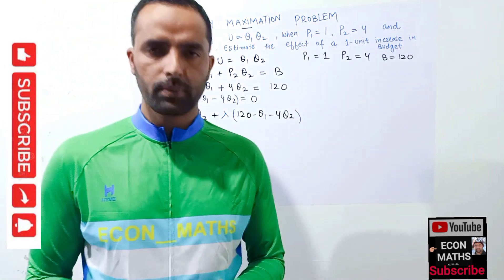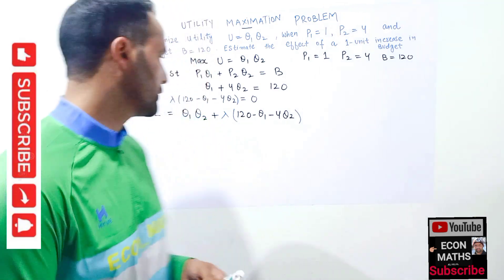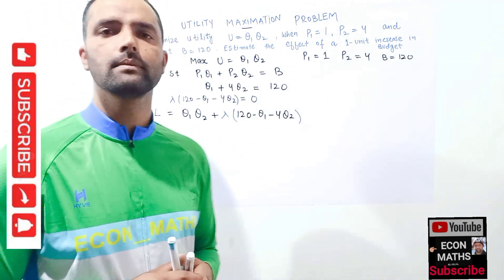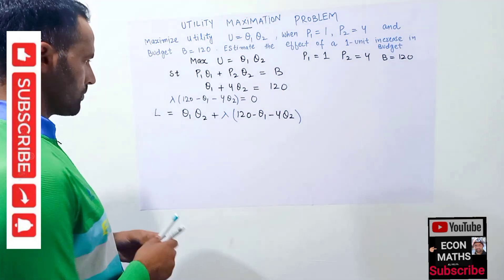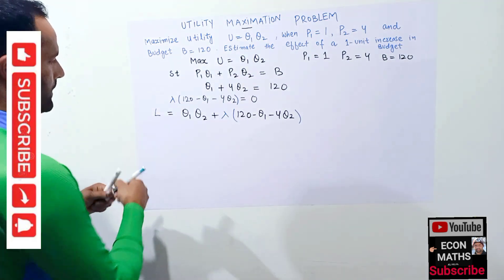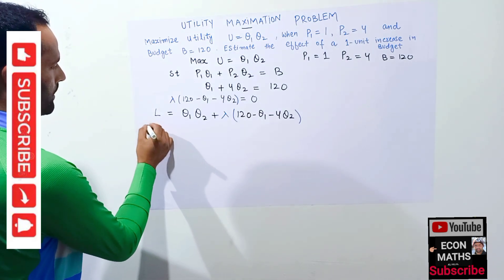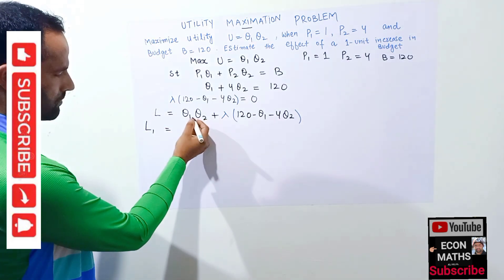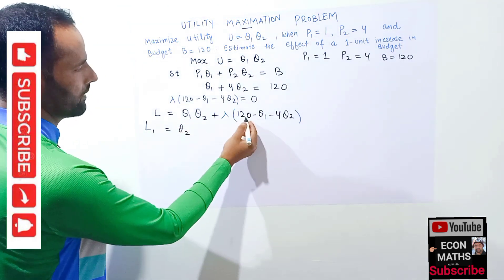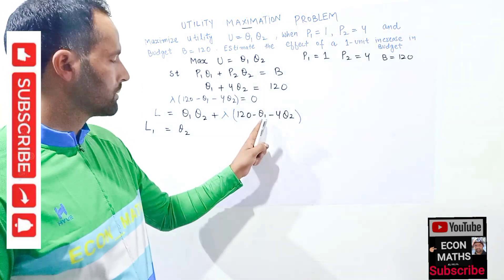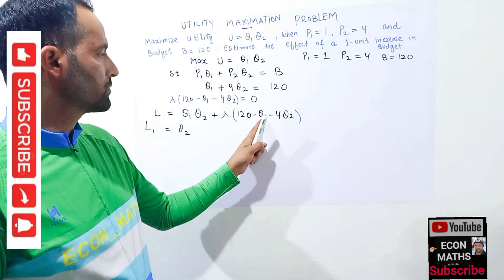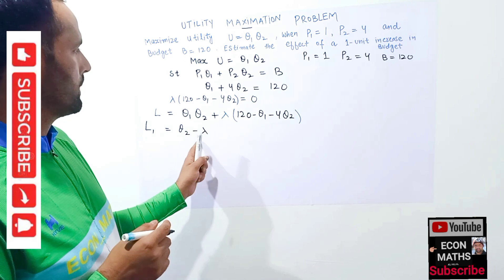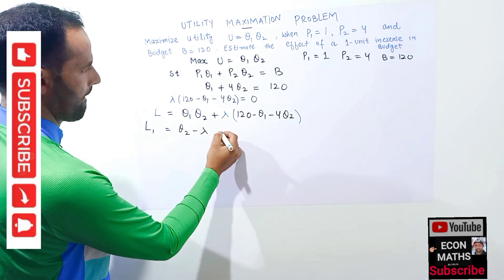To get the optimal values of q1, q2, and lambda, we need to partially differentiate the Lagrangian function with respect to q1, q2, and lambda, and set them equal to zero. Taking the partial derivative with respect to q1: the derivative of q1*q2 with respect to q1 gives q2, and the derivative of the constraint term gives minus lambda. So we get q2 minus lambda equals zero.